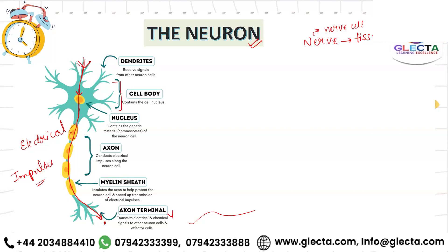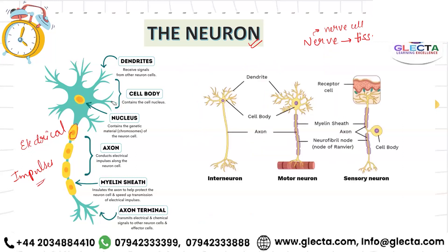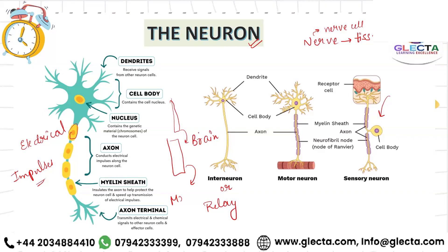There are three types of neuron cells: sensory neuron, motor neuron, and interneuron - also called relay neuron. The sensory neuron receives information and passes it to the next neuron. Like in a relay race, the sensory neuron takes information to the brain; in the brain there is a relay neuron which passes information from the sensory to the motor neuron. Motor neurons are linked to your muscle cells which cause the effect.